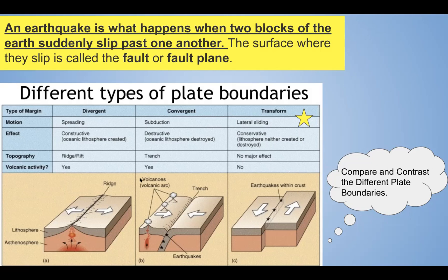At convergent boundaries, plates are colliding into one another, causing rocks to be squeezed. This squeezing is called compression. At convergent boundaries, we typically see reverse faults, which are generally deeper earthquakes and more destructive ones. At transform boundaries, two tectonic plates slide past one another horizontally, creating shear stress — as those plates grind past each other, they create strike-slip faults. A common example is the San Andreas Fault.